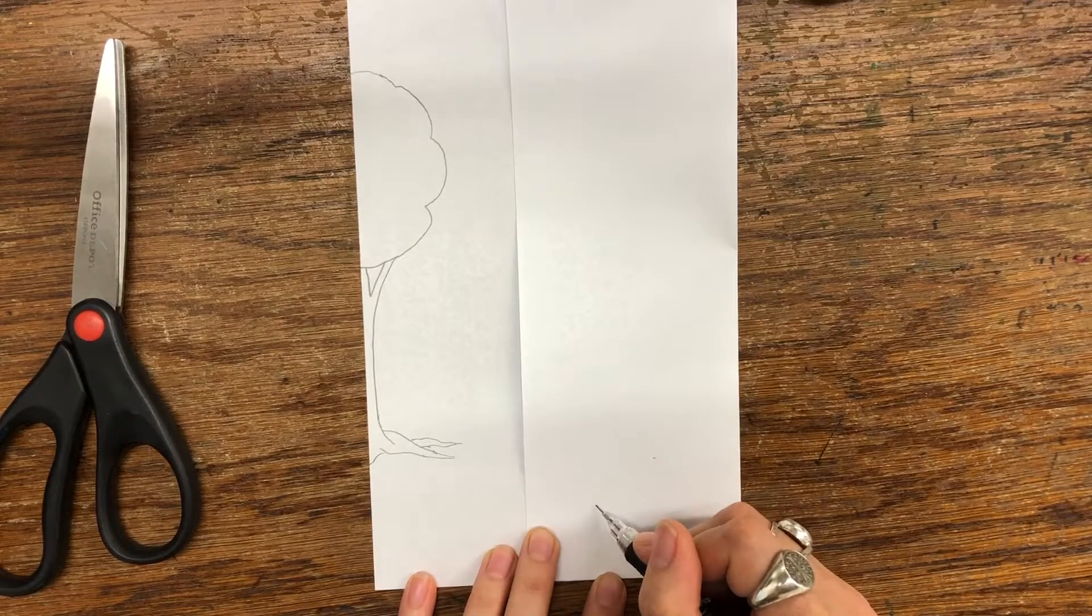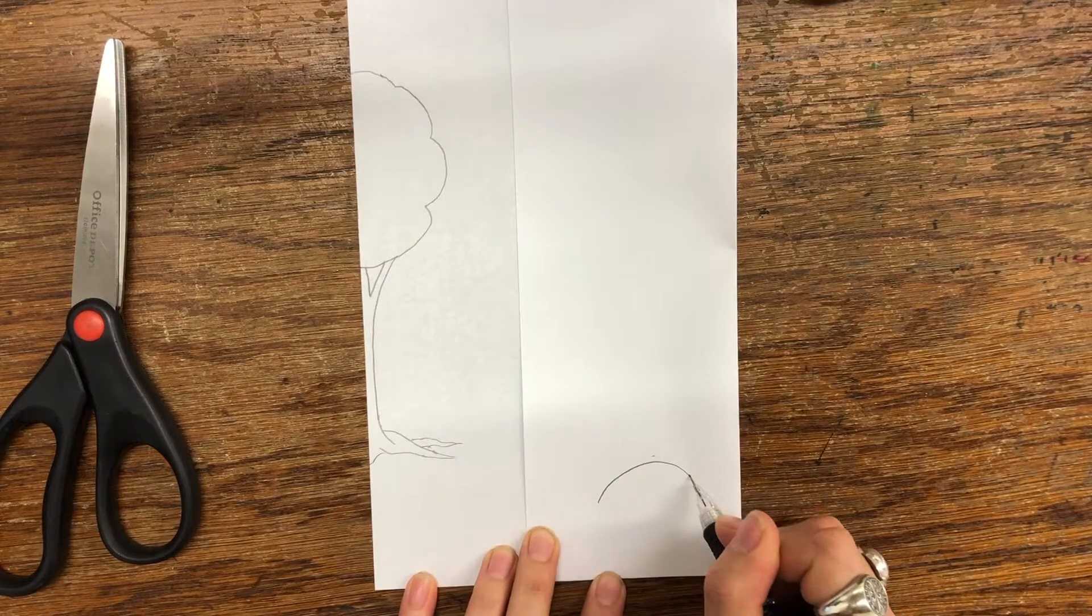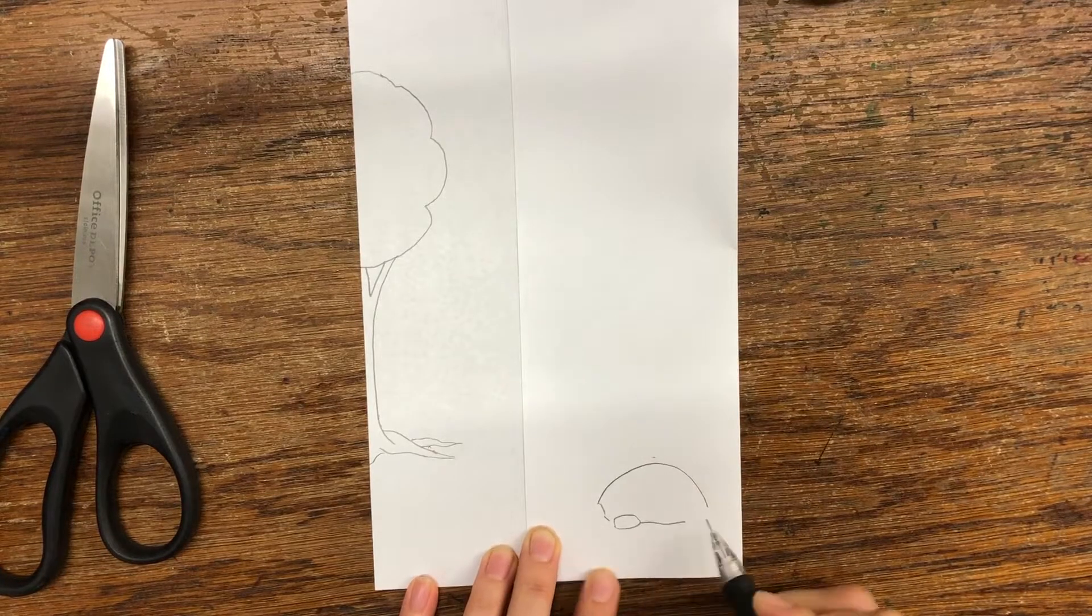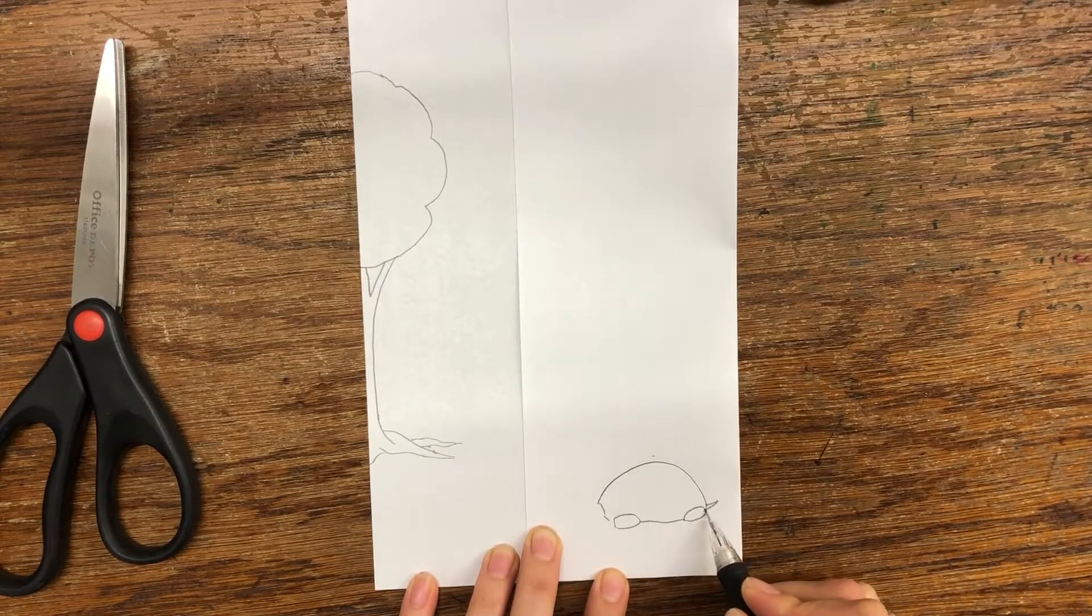What I want is a little animal in the front looking normal and then when I open the flap I want it to do something kind of silly. So I'm going to draw a little turtle.